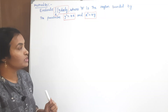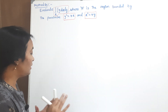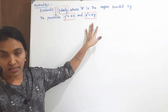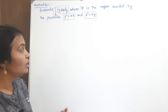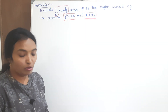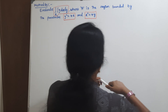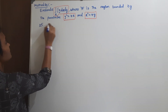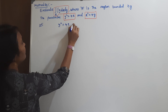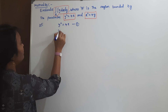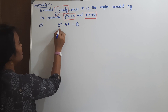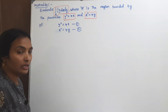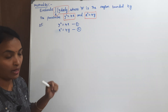First, what we have to do? The region is defined by these two parabolas. First, we have to draw the parabolas. The given parabolas are: y² = 4x — that is one parabola — and x² = 4y — that is another parabola. I want to draw the graph for these two parabolas.